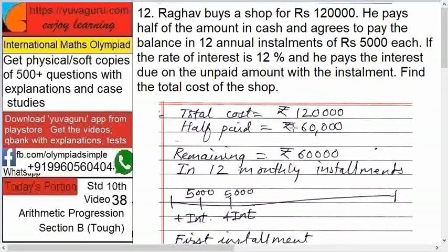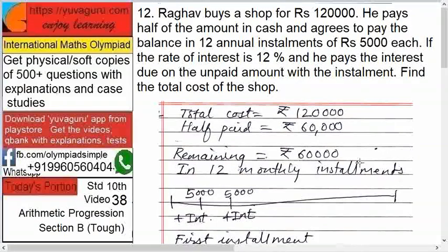Let's understand it first. Total cost is 1,20,000. Half paid means 60,000 paid in cash. So 60,000 is gone. Remaining is 60,000. These are paid in 12 annual installments of 5,000 each.